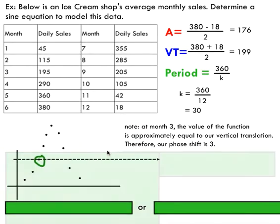If I were to graph this set of data, you'd see that we start really low at 45, we work our way up to our maximum of 380, and then we continue back downward to a low value of 18. So you can see here at approximately month three, the value of the function is approximately equal to our vertical translation of 199. At month three, we're at 195. That's very close to our vertical translation.